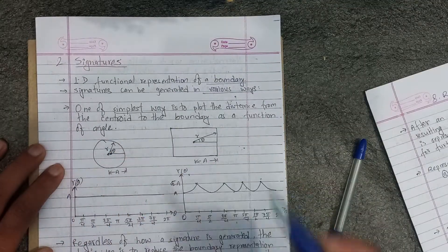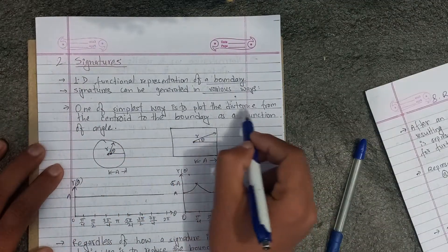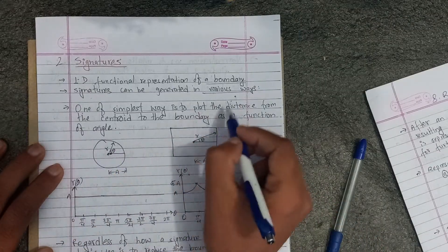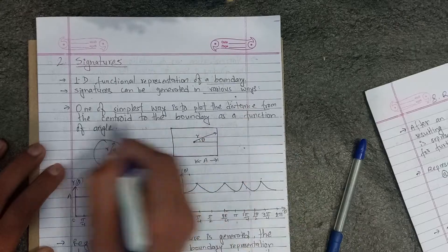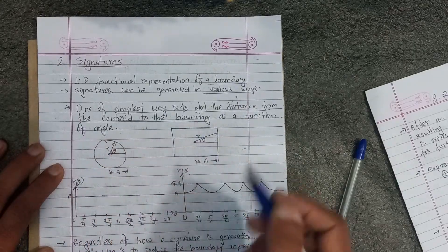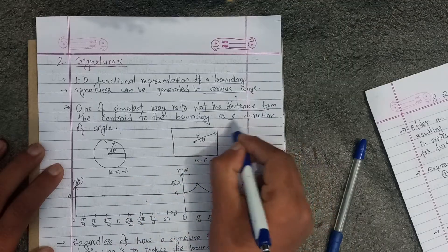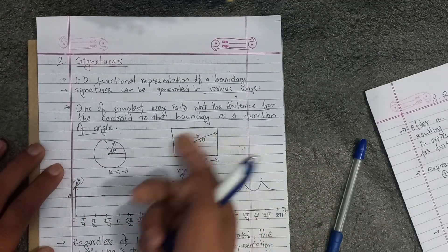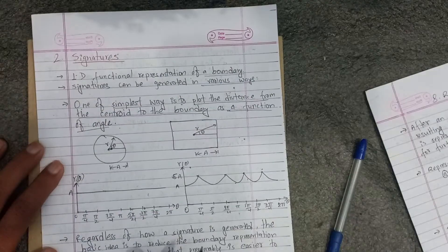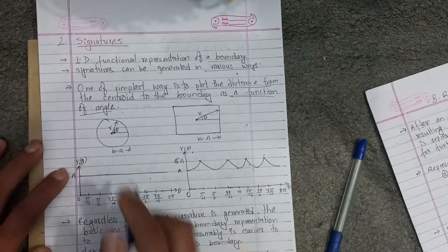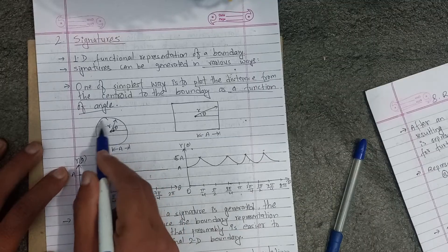The simplest way is to plot distance from a center to the boundary as a function of angle. To plot this distance from center to the boundary. Let's generate this example with a circle, this boundary.